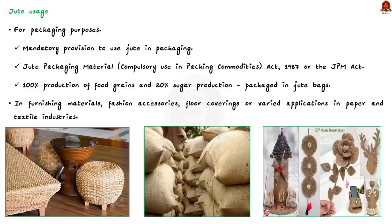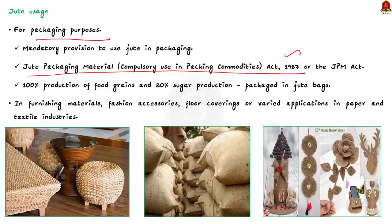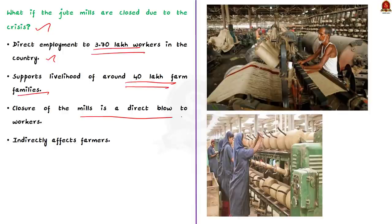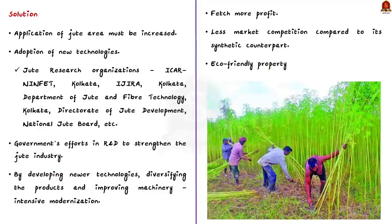Now let us see some uses of jute. It is used for packaging purposes. There is a mandatory provision under the Jute Packaging Material (Compulsory Use in Packaging Commodities) Act 1987, which says that 100% of food grain production and 20% of sugar production must be packaged in jute bags. It is also used in furnishing materials, fashion accessories, floor coverings, and various applications in paper and textile industries. The jute sector provides direct employment to 3.70 lakh workers and supports the livelihood of around 40 lakh farm families. Hence, closure of mills is a direct blow to workers and indirectly affects farmers.